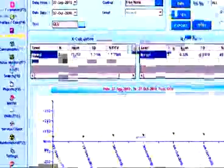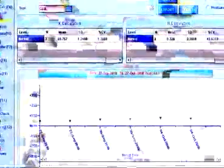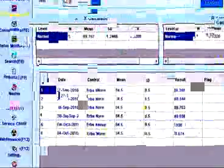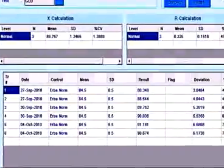The XL200 comes with an extensive quality control program including Levi Jennings chart. Different levels of controls can be run on the XL200 with user definable criteria for flagging the results.